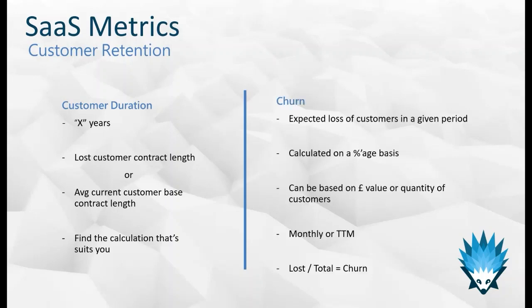Another key customer retention metric is churn. Every SaaS business needs to track their churn, which shows the expected loss within a given time period of customers. It's always calculated on a percentage basis — effectively the number of customers lost divided by what you started with, though the specific numbers you put in can vary.